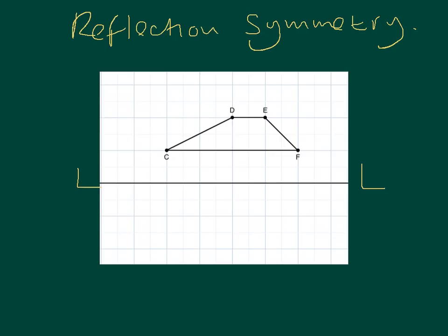So we're going to reflect our quadrilateral D, E, F, C, and back to D. That's our quadrilateral, it's a trapezium. We're going to reflect it through the line L.